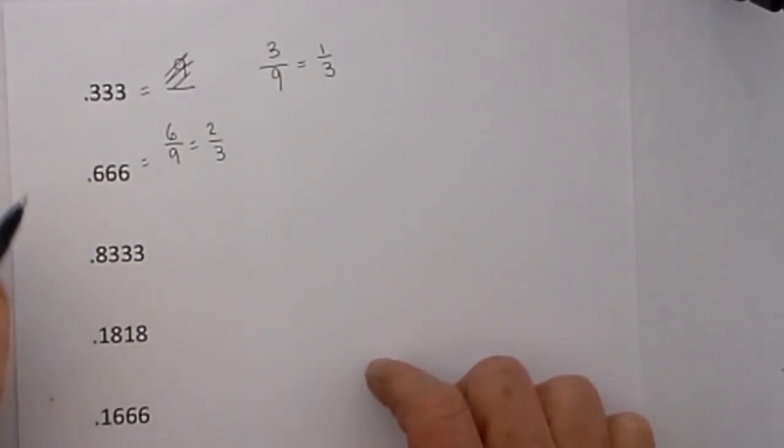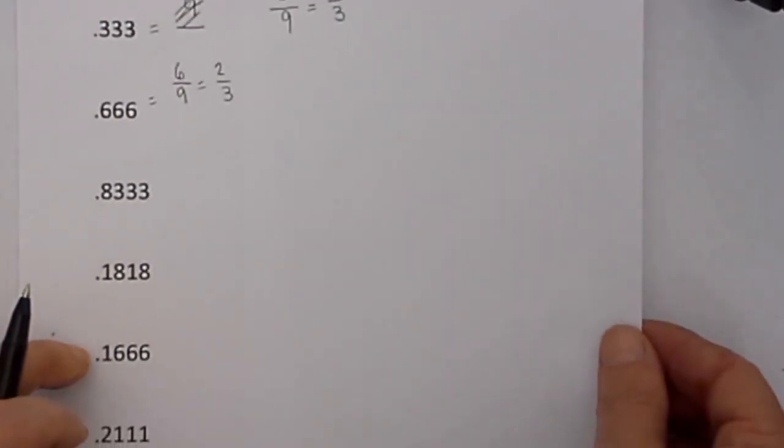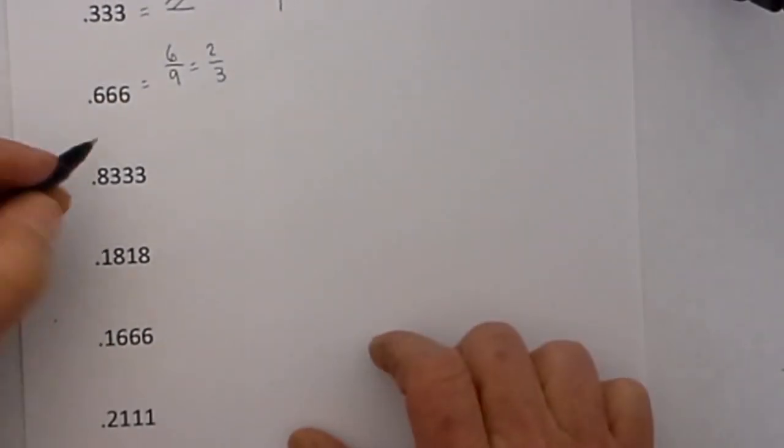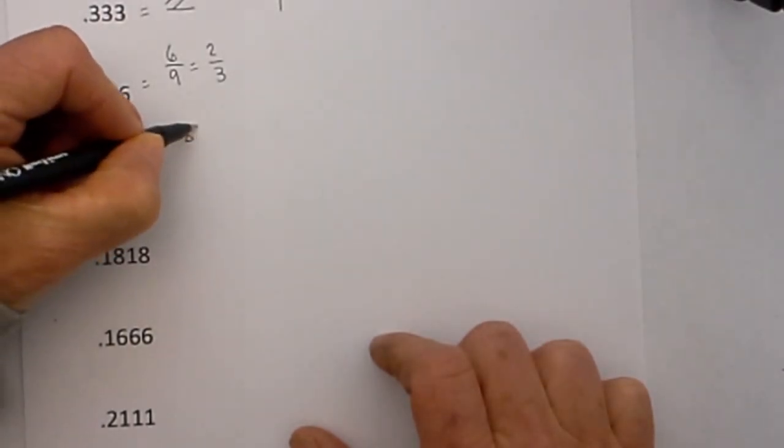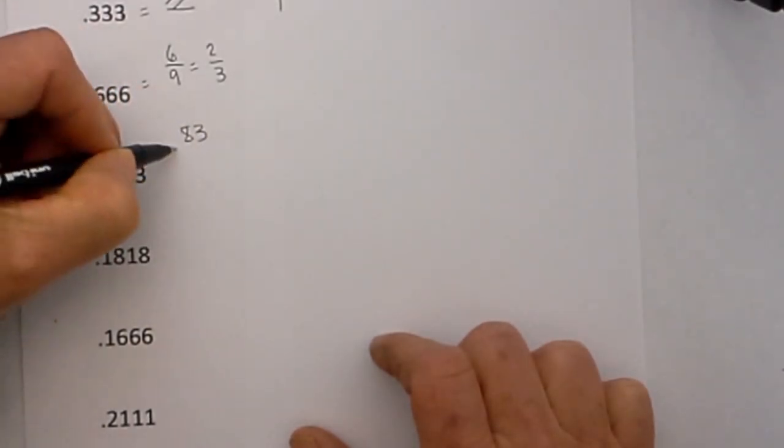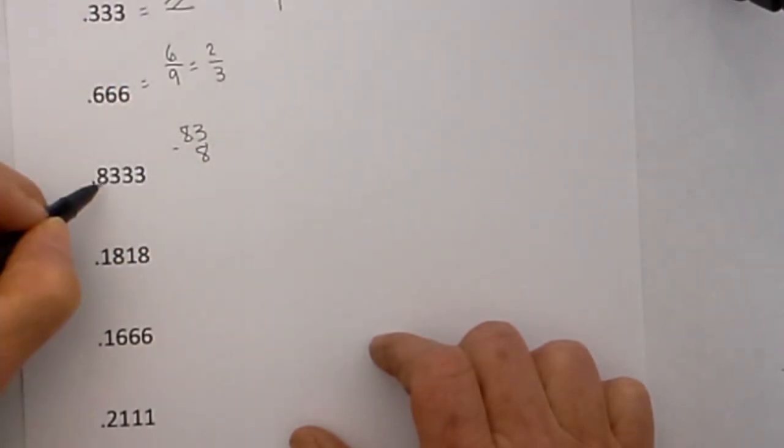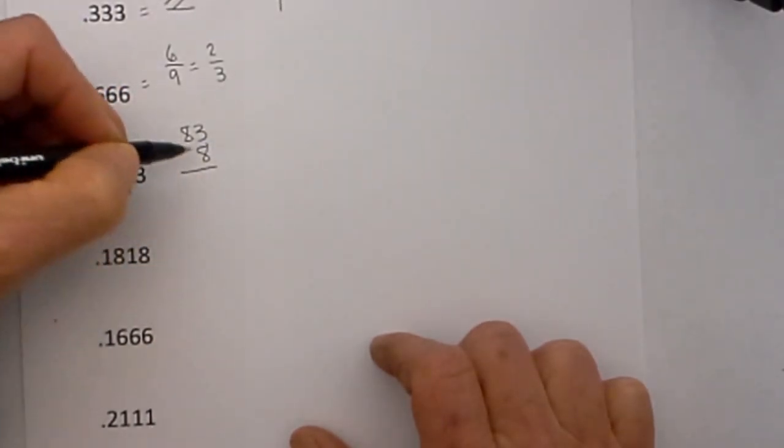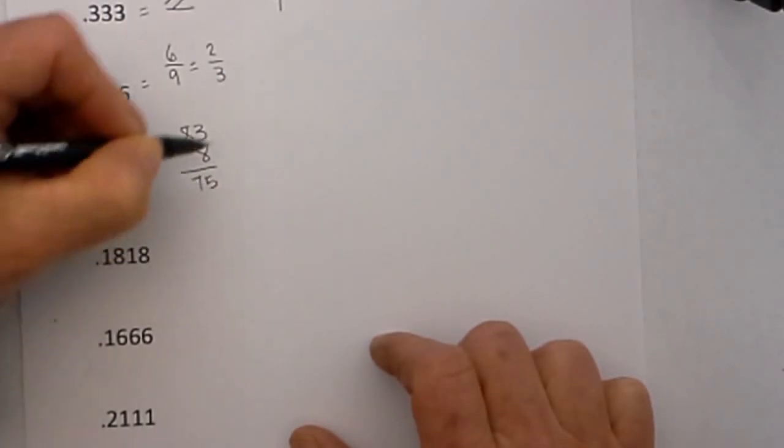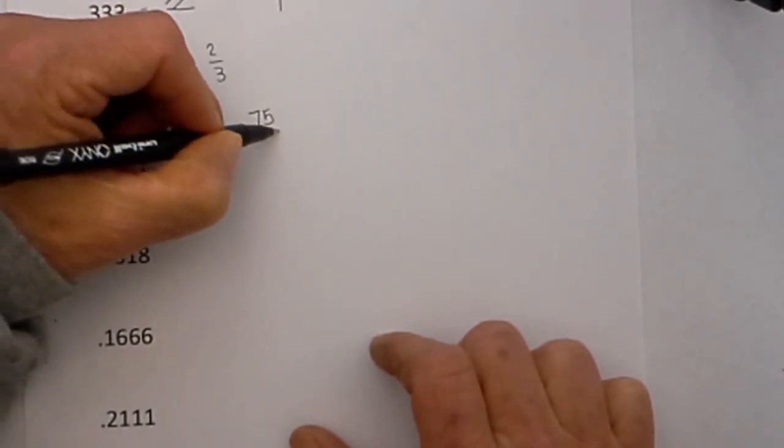This one has a non-repeating number .833. So what we will do is you subtract the repeating number which is 83 minus 8 because that is the non-repeating number and 83 minus 8 is equal to 75 so 75 becomes your numerator.